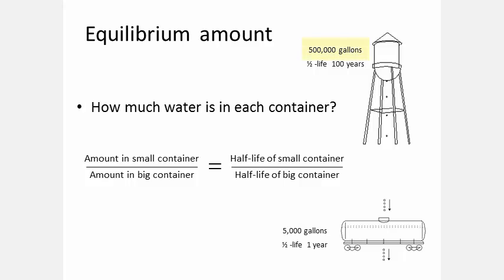So if the city water tank contains 500,000 gallons, the railroad tanker car must contain one hundredth as much, or 5,000 gallons.